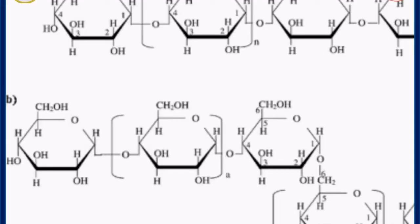Here we can see the structure of amylose and amylopectin. Amylose is a linear structure formed of only alpha-1,4 linkages, whereas in amylopectin we can see both alpha-1,4 and 1,6 linkages.